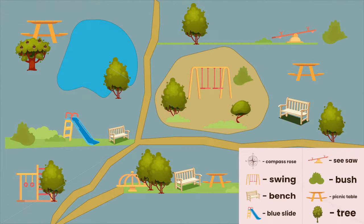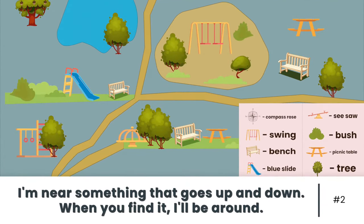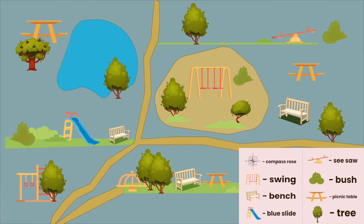Now, the second clue. I'm near something that goes up and down. When you find it, I'll be around. Do you see a symbol on our map key that goes up and down? Oh, I see two things. Swings go up and down and a seesaw goes up and down. Let's look together for the second puppy. Jump up and down when you find him. Here's the swing on the map. See, it matches the swing in the key. Hmm. No puppy here. Let's go find the seesaw. Puppy! Great job.